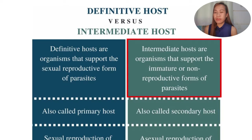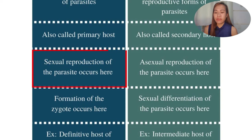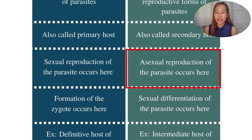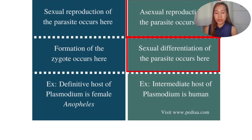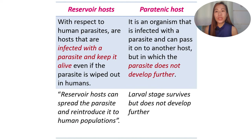An example is Plasmodium: the definitive host is the female Anopheles mosquito, where sexual reproduction occurs. The intermediate host of Plasmodium is the human, where asexual reproduction and sexual differentiation occur. So asexual reproduction occurs on the intermediate host, while sexual reproduction occurs on the definitive host.